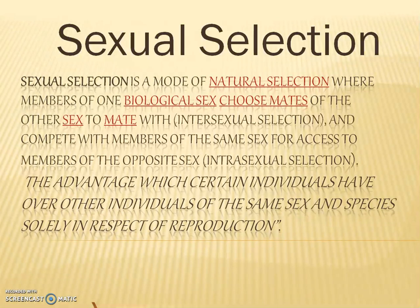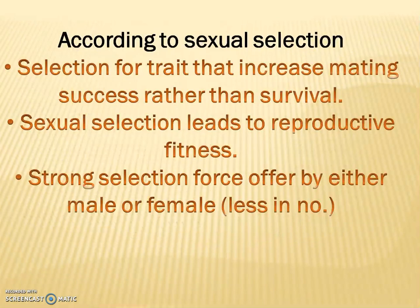The advantage which certain individuals have over other individuals of the same sex and species solely in respect to reproduction. Sexual selection operates in organisms which are produced by sexual reproduction. In sexual reproduction, there will be homologous recombination or Mendel's law of independent assortment, fusion of gametes, and formation of gametes. Sexual selection selects for traits that increase mating success rather than survival.